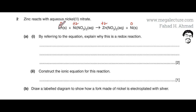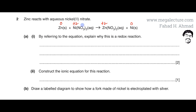Zinc on the reactant side is neutral, so it has an oxidation state of zero. Nickel is bonded to nitrate; NO₃⁻ has a charge of minus one, and there are two nitrates giving a total of minus two, so nickel must be plus two.